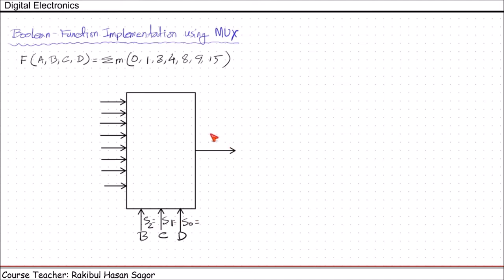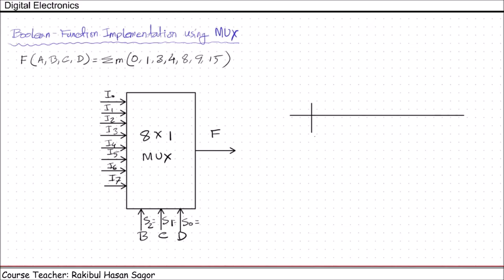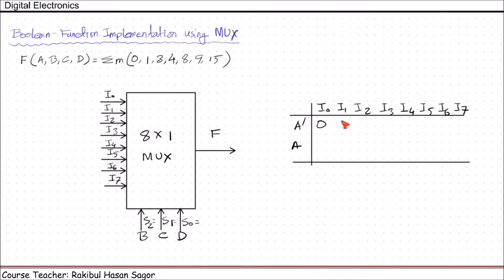There will be one output line — this is the function output. This is the 8-to-1 MUX with inputs I0 through I7. Next, we need to plot a table with I0 through I7, and write A prime and A for the remaining variable A. Write the minterm decimal values 0, 1, 2, 3, 4, 5, 6, 7, 8, 9, 10, 11, 12, 13, 14, 15.